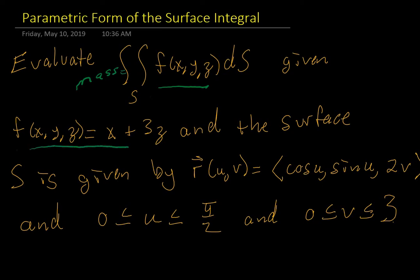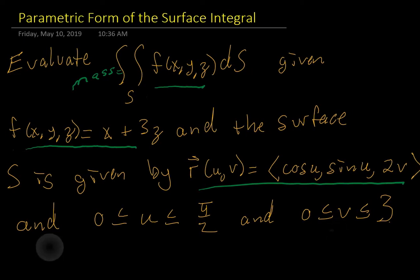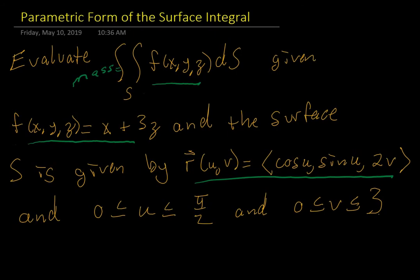And our particular density function is given here: f of x, y, z is x plus 3z. And here's our surface, parametric form this time. So the goal for this is to set up this integral and evaluate it if it's not too terrible. Now remember this is x, and this is y, and this is z.